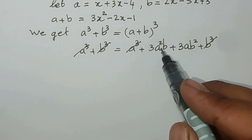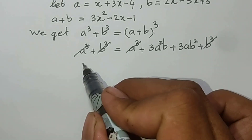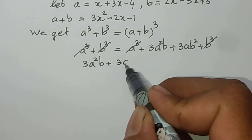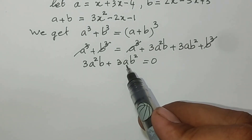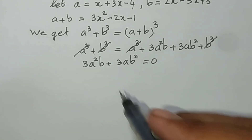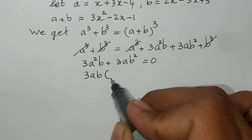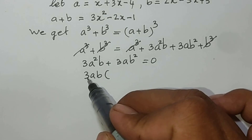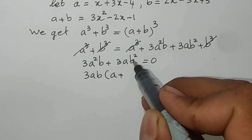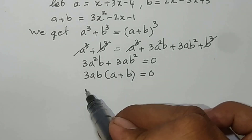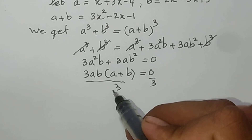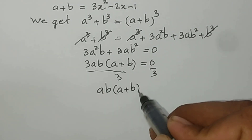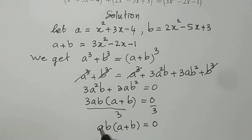We are left with 3A²B + 3AB² = 0. We can factor out 3AB to get 3AB(A + B) = 0.